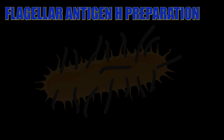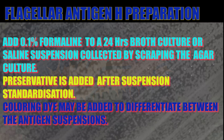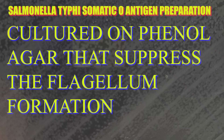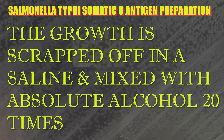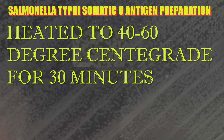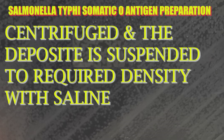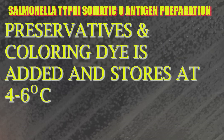The H flagellar antigen suspension is prepared by adding 0.1% formalin to a 24-hour broth culture or saline suspension of an agar culture. The O somatic antigen suspension is prepared by culturing the bacterium on phenyl at 1:800 concentration; when Salmonella are grown on agar containing phenyl, flagella are inhibited. The growth is scraped off in a small volume of saline, mixed with 20 times its volume of absolute alcohol, heated at 40–60°C for 30 minutes, centrifuged, and the deposit re-suspended in saline for appropriate density. Chloroform may be added as a preservative. The strains used are usually S. typhi 901 O and H strains.